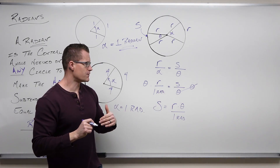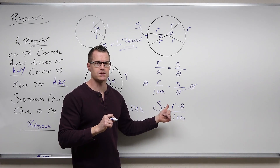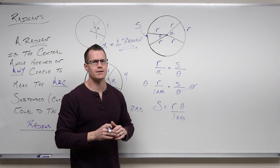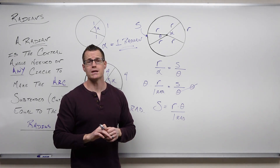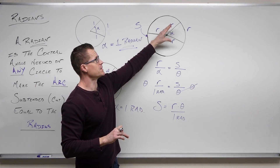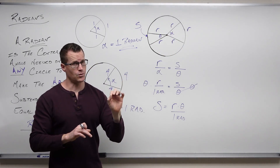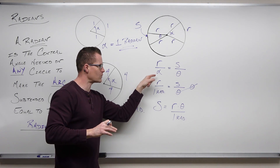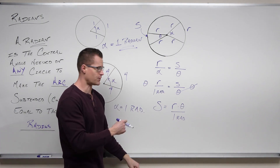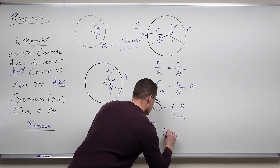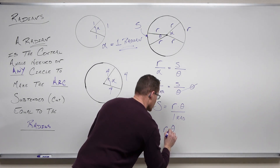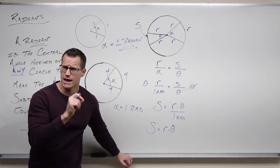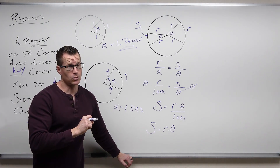If you try to plug degrees into this formula, you'll run into major issues. This only works for radians because of what we did — we built one radian into the proportion, and the units simplify accordingly. Arc length is always equal to r times theta, the central angle subtending that arc, but it only works for radians.